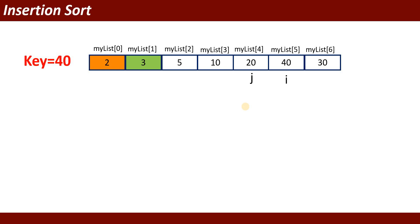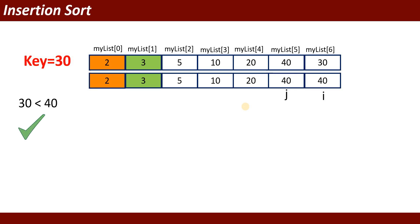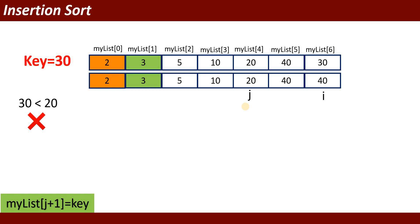Next, i is at index 5 with value 40. Is 40 less than 20? No, so i moves right. Now i points to 30. Is 30 less than 40? Yes, true — j shifts 40 one position ahead, so 40 is at both index 5 and index 6. Then we check: is 30 less than 20? No, it is not true. So we increment j+1 and insert 30 there. Since j was at index 4, j+1 is index 5, and 30 is inserted at index 5. The value 30 moved from index 6 to index 5.